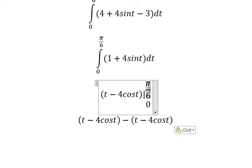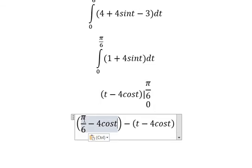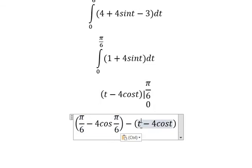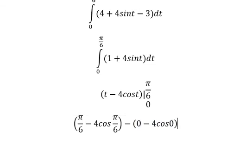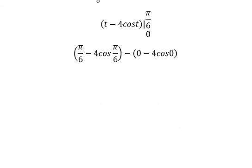So we put pi over 6 in here, and this is number 0. And now we have the final answer. So we have pi over 6 minus 4 cosine pi over 6, which gives pi/6 - 4 + 2√3.